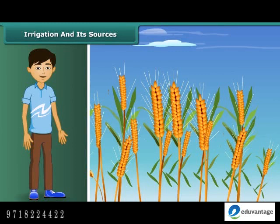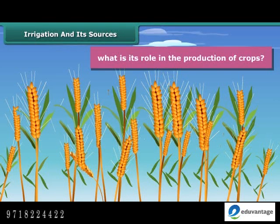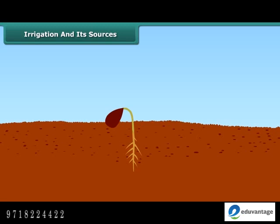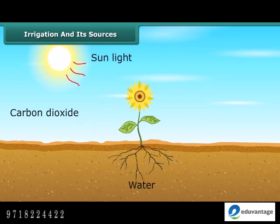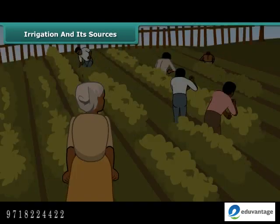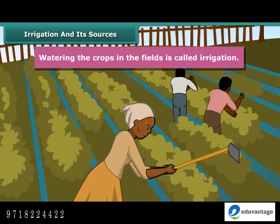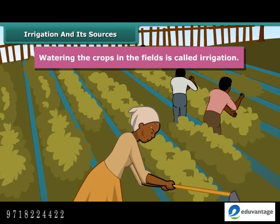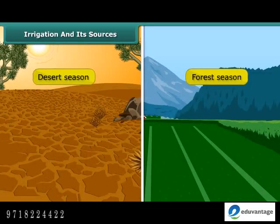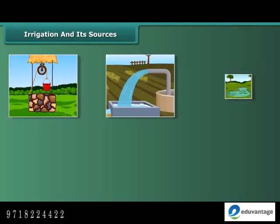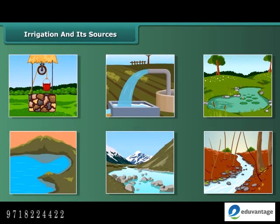Water is very essential for all living beings. Water is essential for crops because germination of seeds cannot take place under dry conditions. Water is absorbed by plant roots, and along with it, minerals and fertilizers are also absorbed. Watering the crops in the fields is called irrigation. The time and frequency of irrigation varies from soil to soil, crop to crop and season to season. Sources of irrigation include wells, tube wells, ponds, lakes, rivers, dams and canals.